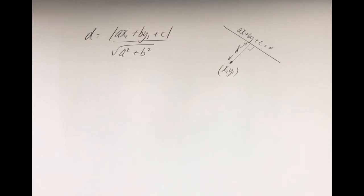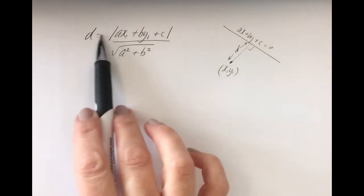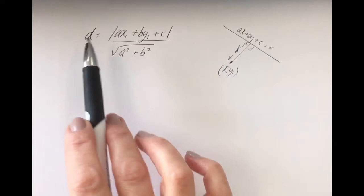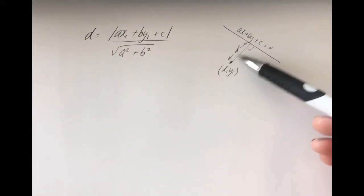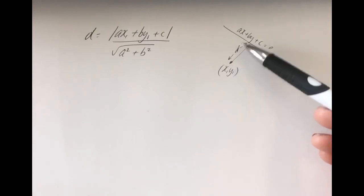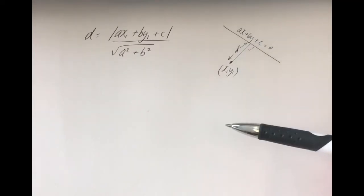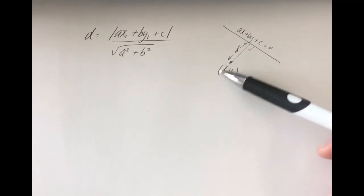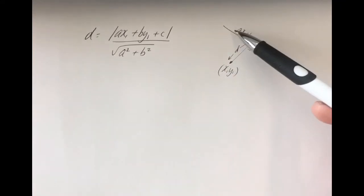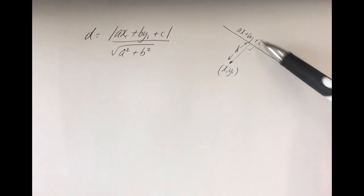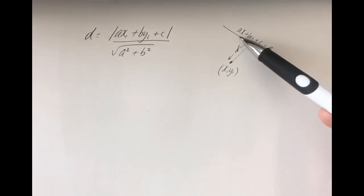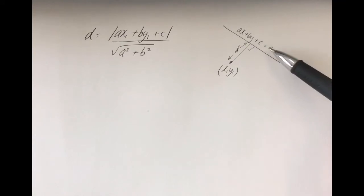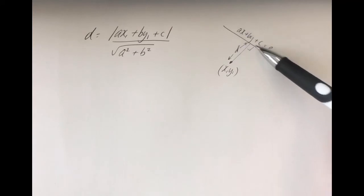In this video we're going to look at the formula which gives the distance from a point to a line. Graphically, we're looking at the perpendicular distance between a point and a line. The two things we need for the formula are your coordinate point x1, y1, and the equation of the line. It's important to note that the equation of the line must be in the format ax plus by plus c equals 0, so you may have to do a little bit of rearranging.